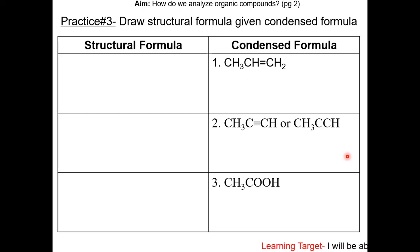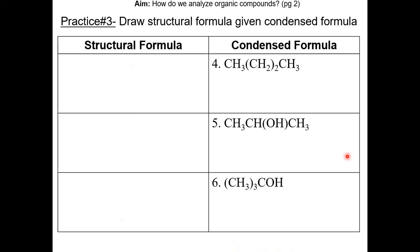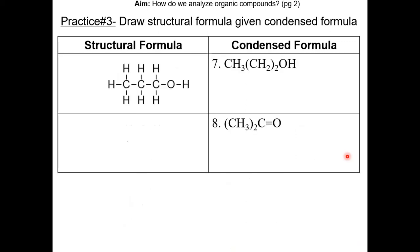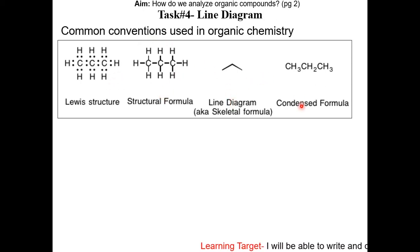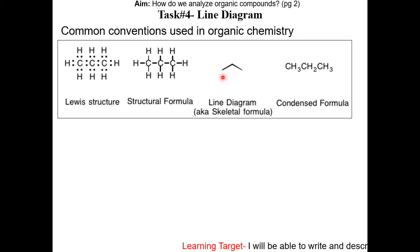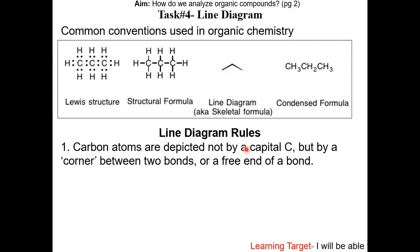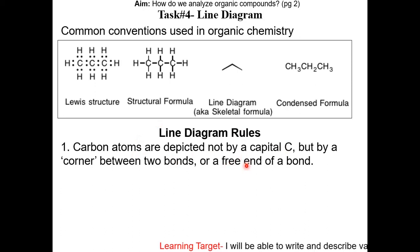Here are the common conventions used in organic chemistry to represent a molecule: the Lewis structure, the structural formula, the line diagram, and the condensed formula. The only one we have not covered yet is the line diagram. The line diagram is not on the Regents, but it is the most simple and common way of representing organic molecules.